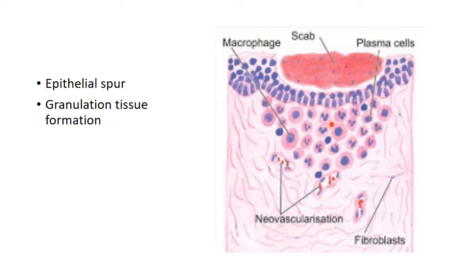The rest is the same — the epithelial spurs migrate in such a way that they separate the overlying necrotic material from the underlying viable tissue, and this necrotic material, just like in primary intention, is cast off as scab. The major difference and main bulk of secondary healing is the formation of granulation tissue from the base upwards.